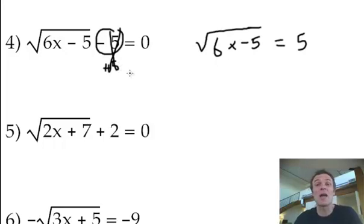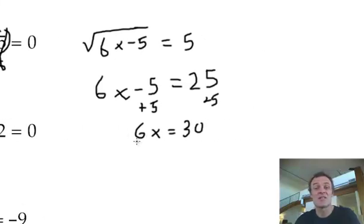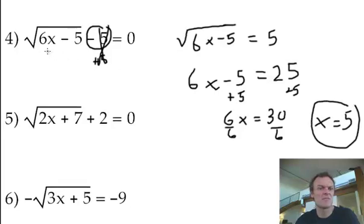Square root of 6x minus 5 equals 5 because I added 5 to both sides. So let's square both sides. The easy thing about this left-hand side now is that's just going to be 6x minus 5. I squared the square root, so it's just what's inside, 6x minus 5. But now what's 5 squared? That's 25. Now just do the algebra. Add 5. You're going to get 6x equals 30. Divide both sides by 6. x equals 5. You can always test it if you want to, plug it back into there and see what you get.